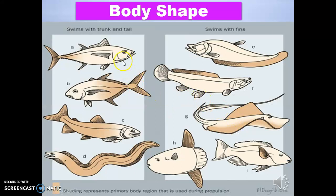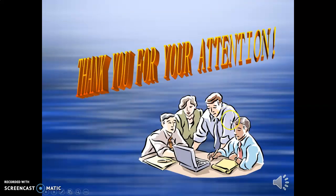Regarding body shape, on the left side you can see fishes that swim with both the trunk and tail to change swimming direction. On the right side, fishes swim only with the help of fins. The shading represents the primary body region used during propulsion — that means to pierce the water current. Thank you very much for your patient listening.